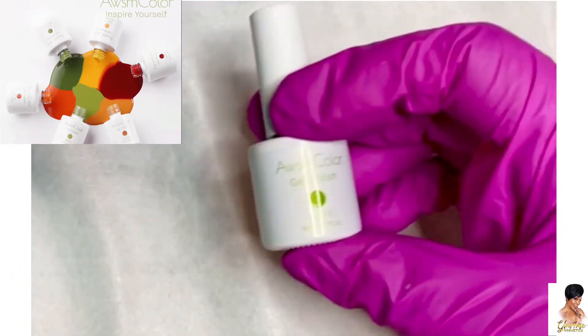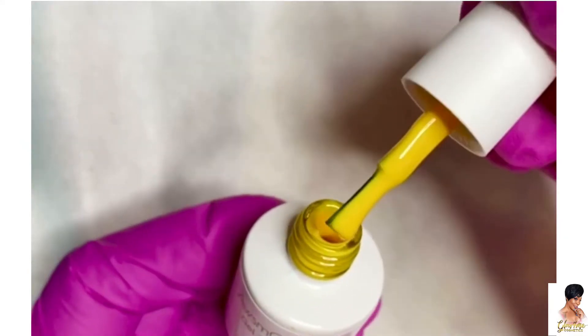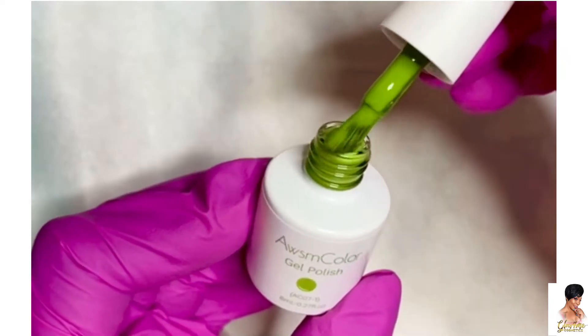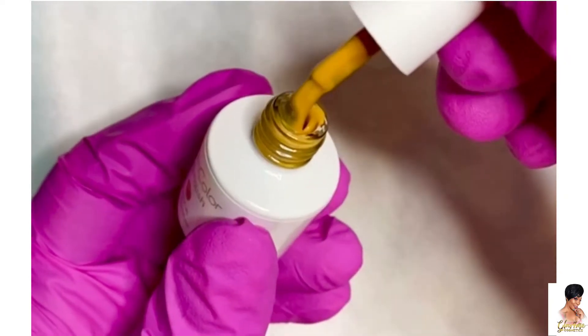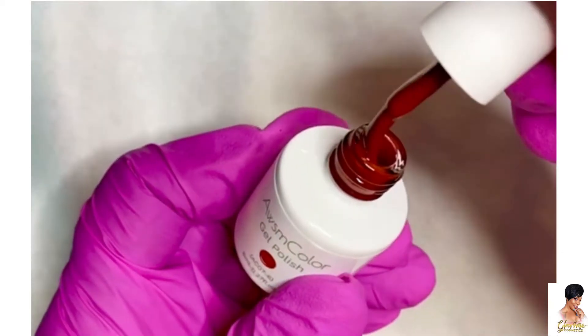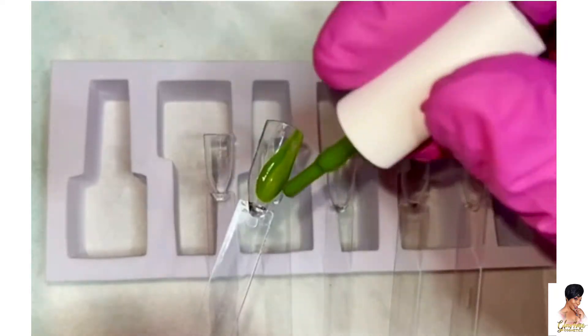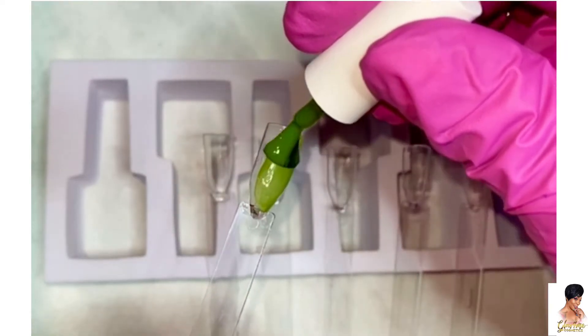They all seem pretty opaque except for the yellow to me. Now it could be because I'm swatching it on the clear nail tips. My favorite out of all 6 is the caramel shade. I like it. So this is one layer as you can see.